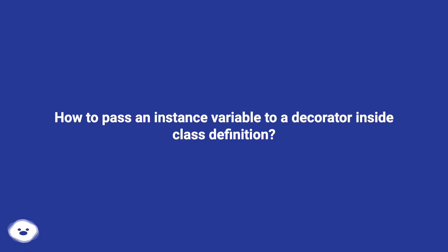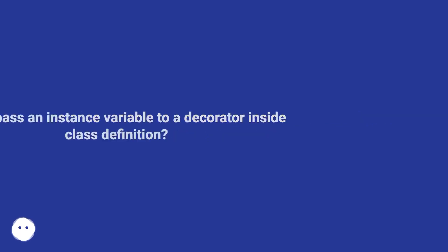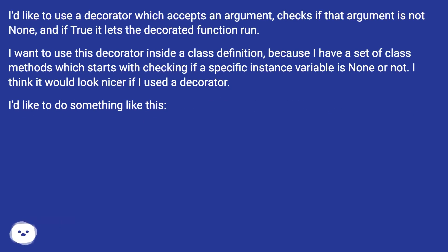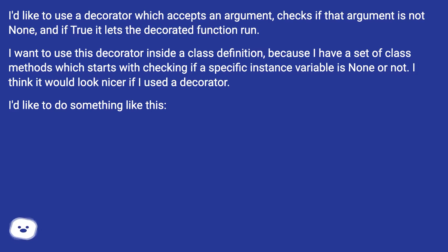How to pass an instance variable to a decorator inside a class definition? I'd like to use a decorator which accepts an argument, checks if that argument is not None, and if true it lets the decorated function run. I want to use this decorator inside a class definition, because I have a set of class methods which start with checking if a specific instance variable is None or not. I think it would look nicer if I used a decorator.